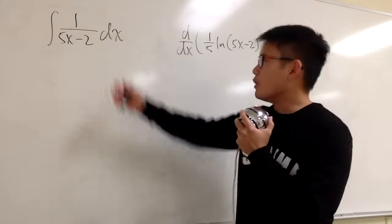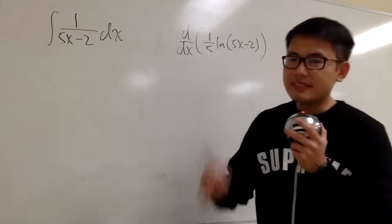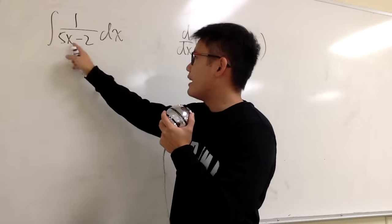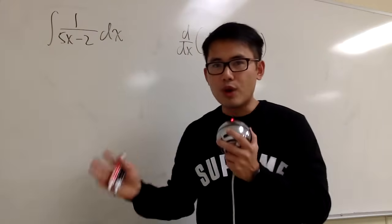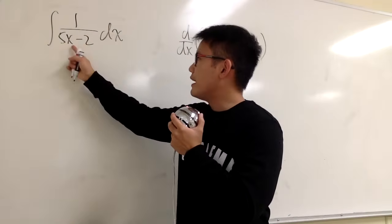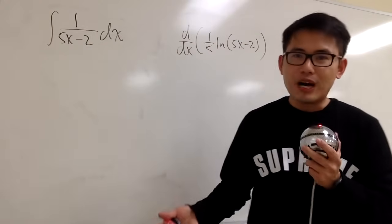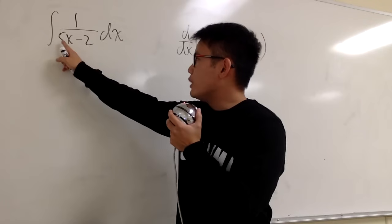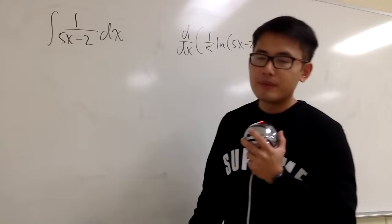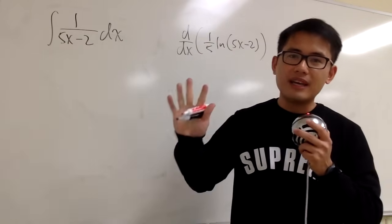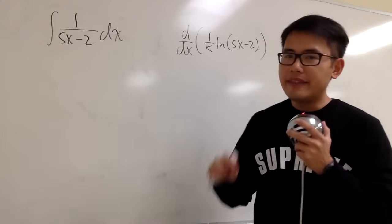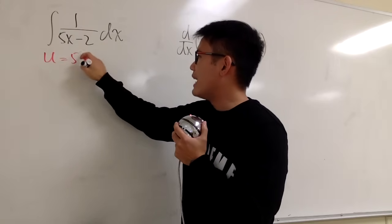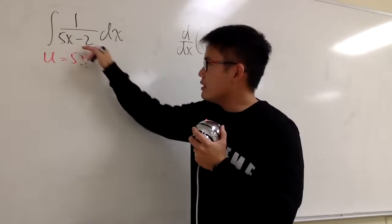Let's look at the integral and derivative equation side by side, but this time we'll look at the integral first. We have to integrate 1 over (5x minus 2) dx. Do we know the derivative of what function gives us exactly 1 over (5x minus 2) right away? Maybe it's not too obvious, and this is where u-sub can help. We have 5x minus 2 in the denominator. If I differentiate 5x minus 2, I get just 5 — which is just a number — and that would be a good choice for u.